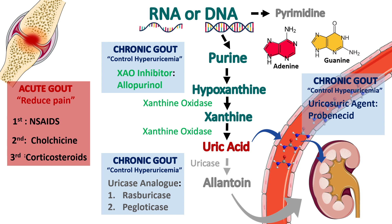So overall, we have three classes of medicines to treat chronic gout and three lines of medicines to treat acute gout. I hope you have understood the overview well. Until then, bye-bye. See you in the next one.